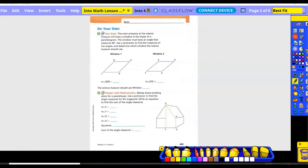On your own, number two, use tools. The Science Museum will have a window in the shape of a parallelogram. The window must have an angle that measures 40 degrees. Use a protractor to find the measure of the angles and determine which window the Science Museum would use. So I'm going to set my protractor on here at point C. Because that's what they want, is point C. So I'm going to put my zero degrees at point C. And then I'm going to run my straight edge along B. Where did D come out to? 47 degrees.